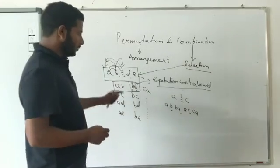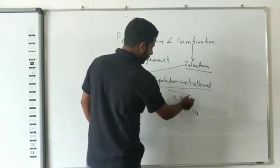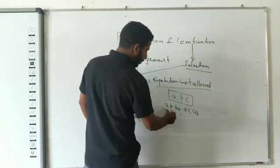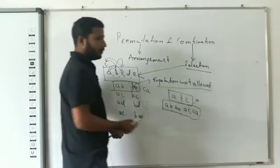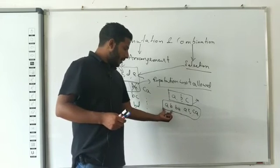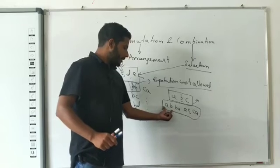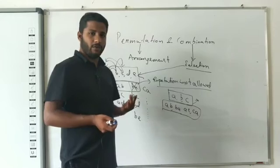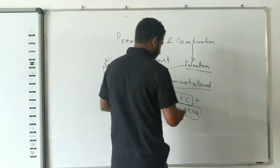So with three alphabets A, B, C, we are learning about these arrangements. In permutation, repetition is allowed, whereas in combination, repetition is not allowed. This is a very important concept: permutation allows repetition; combination does not allow repetition.